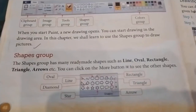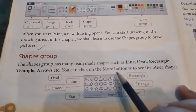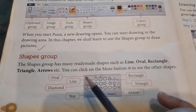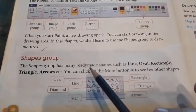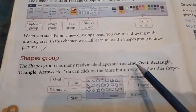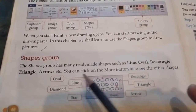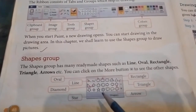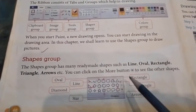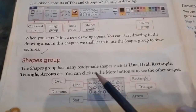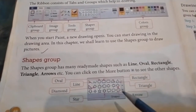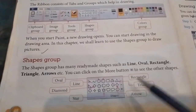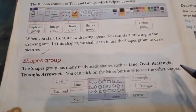First we are talking about the shapes group. The shapes group has many ready-made shapes such as line, oval, rectangle, triangle, arrows, etc. You can see over here stars, box. You can click on the more arrow or the more button to see other shapes.